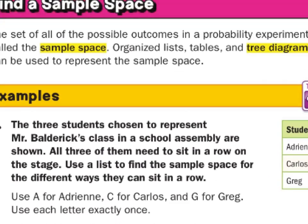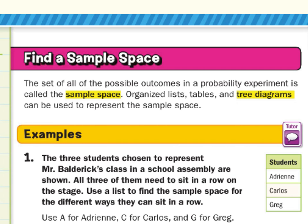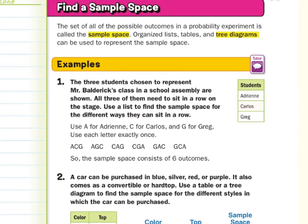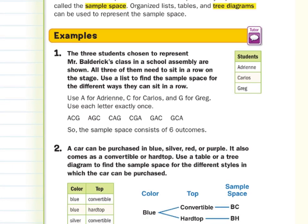The set of all possible outcomes in a probability experiment is called the sample space. Organized lists, tables, and tree diagrams can be used to represent the sample space. In our first guided example, three students chosen to represent Mr. Baldrick's class need to sit in a row on the stage. Using a list — abbreviating Adrian as A, Carlos as C, and Greg as G — the outcomes are ACG, AGC, CAG, CGA, GAC, GCA. The sample space consists of six outcomes.